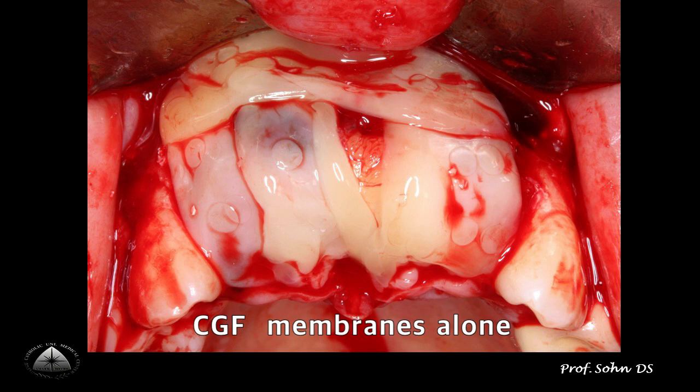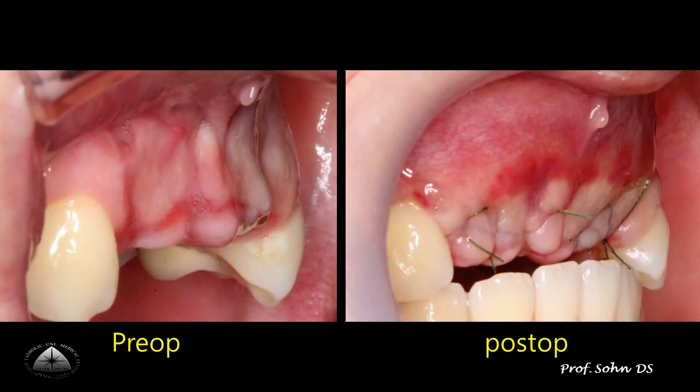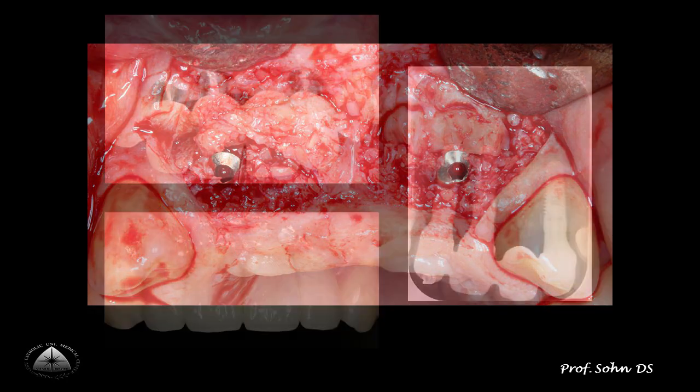Four CGF membranes were placed over the bone graft to accelerate wound healing. The postoperative intraoral view shows excellent horizontal ridge augmentation. All tooth block bones showed excellent consolidation on the defect after three weeks of healing.